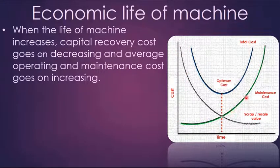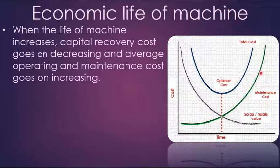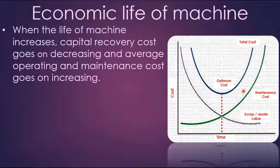Another line on the graph indicates maintenance cost and operating cost of the machine. As the machine is new, it does not require any maintenance — in many cases maintenance is free for the first year. But gradually, maintenance cost and operating cost increase because as the machine becomes older, it requires new spare parts and change of oil filters. Also, due to loss in efficiency, operating cost increases. So with respect to time, as the machine becomes older, maintenance cost is increasing.